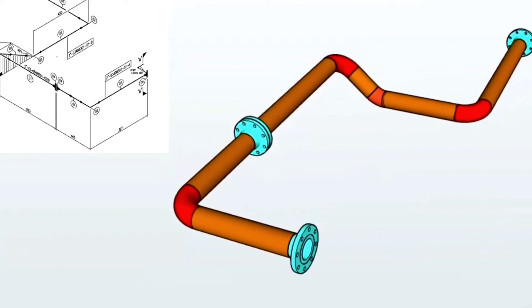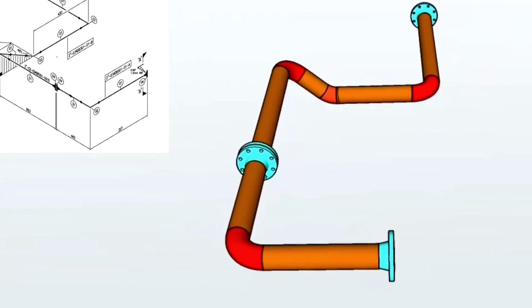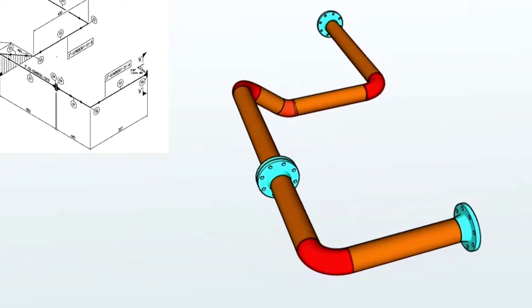By comparing the 3D model of the pipeline with the pipe isometric, the pipe drawing can be easily understood.